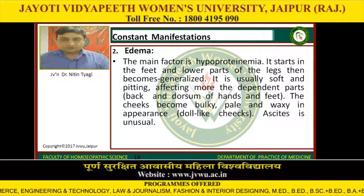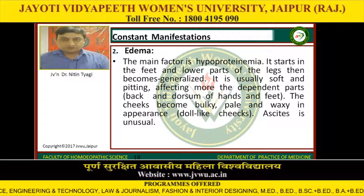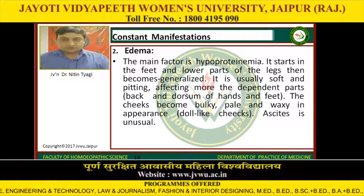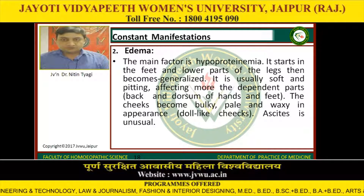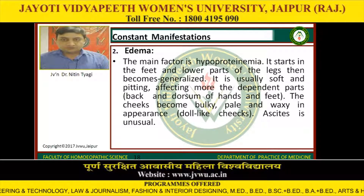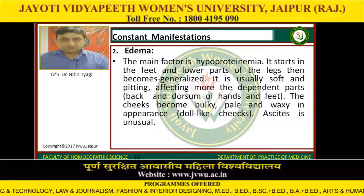The second constant manifestation is edema. The main factor is hypoproteinemia. It starts in the feet and lower part of the legs, then becomes generalized. It is usually soft and pitting, affecting more the dependent parts — that is, the back and dorsum of the hands and feet. The cheeks become bulky, pale and waxy in appearance, that is doll-like cheeks. Ascites is unusual.